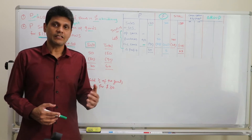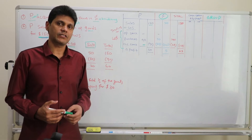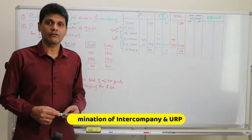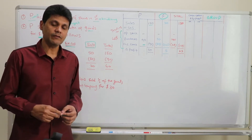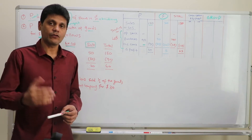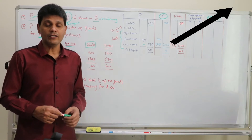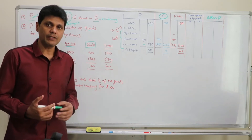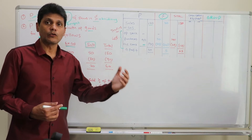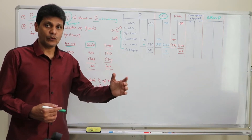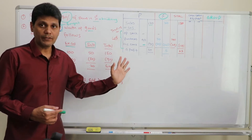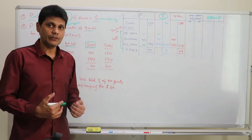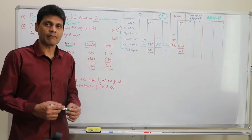Hi everyone, welcome to the session. This is a continuation of my discussion on elimination of intercompany transactions and elimination of unrealized profit. I made a video previously on this topic, and before you watch this video I would highly recommend you to go and watch my previous video. In my previous video I made an assumption that the parent company had sold goods to the subsidiary company where the subsidiary had not sold goods to external customers. In this particular video, I have slightly changed the assumption.